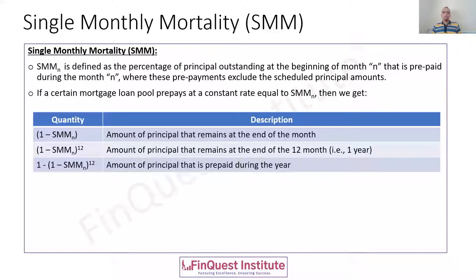Now that we know why modeling prepayments is important, let's understand a couple of key terminologies. We start with SMM, or Single Monthly Mortality. SMM is defined as the percentage of principal outstanding at the beginning of a certain month N that is prepaid during that month N, where scheduled principal payments are excluded. If it is a scheduled principal payment we already know that will happen; SMM relates to the unscheduled payment above that — this is technically the definition of SMM for any generic month N.